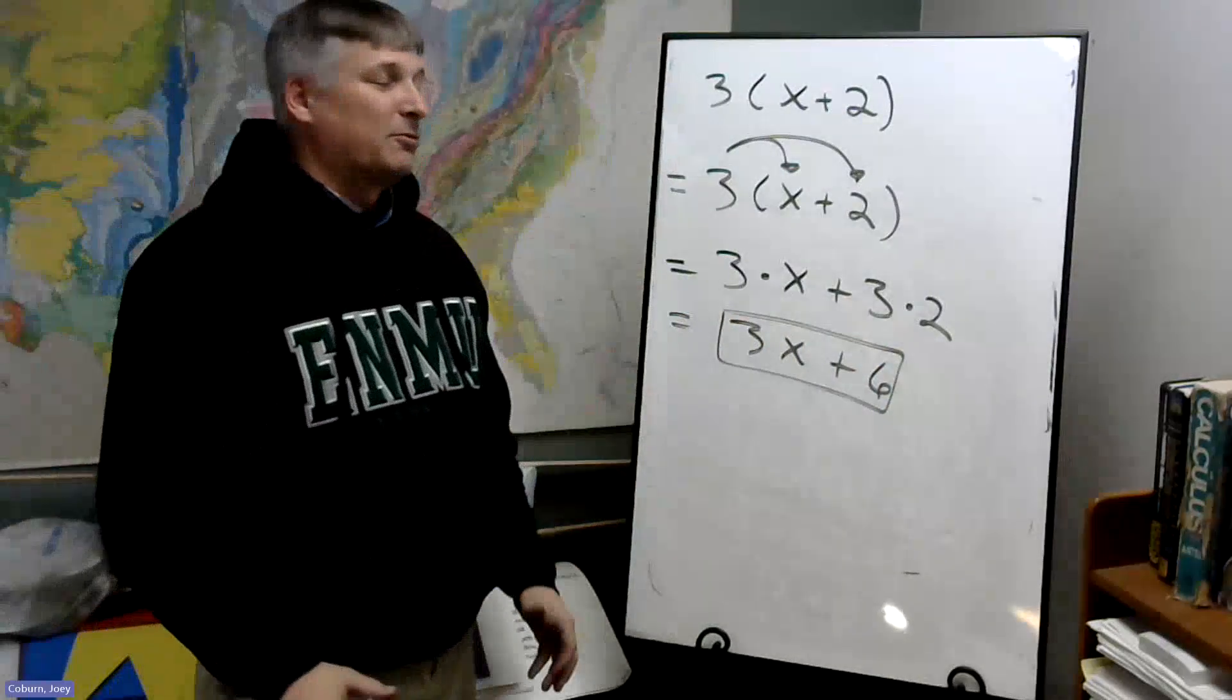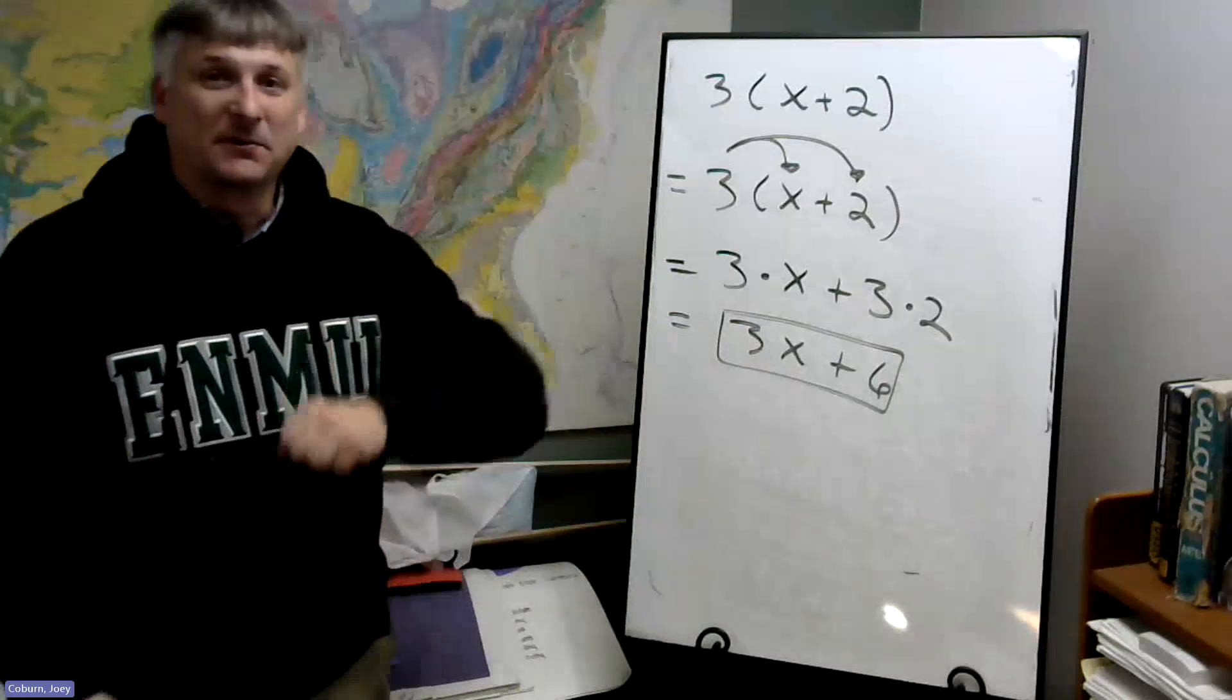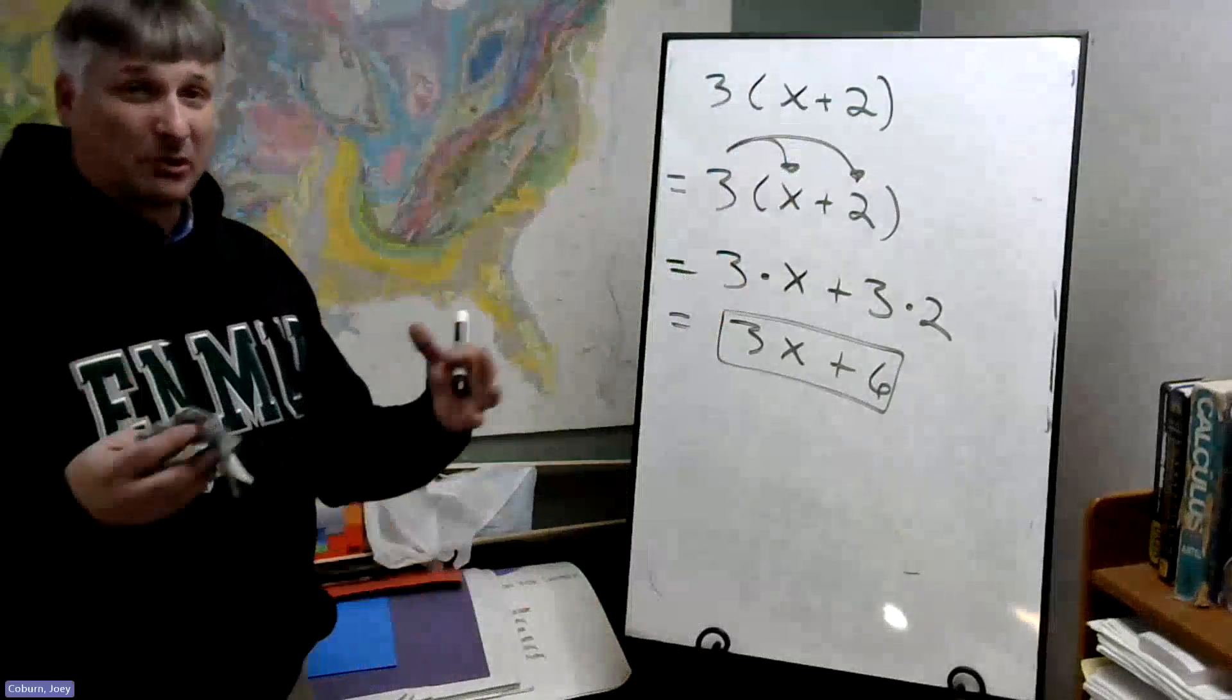So this is distribution. We skip all those middle steps and we just get our answer. It's a shortcut.